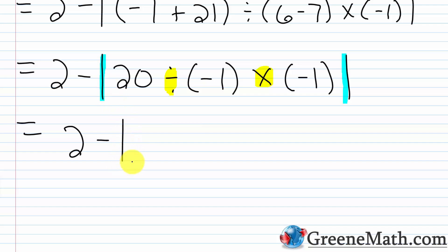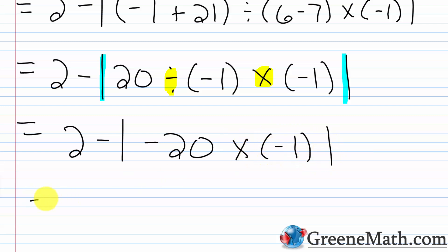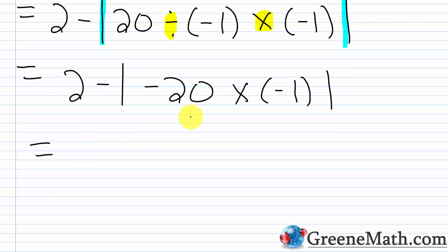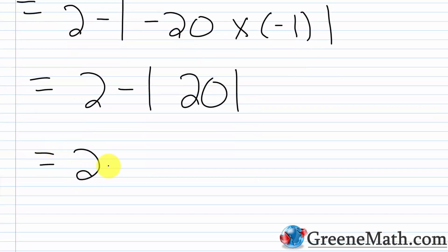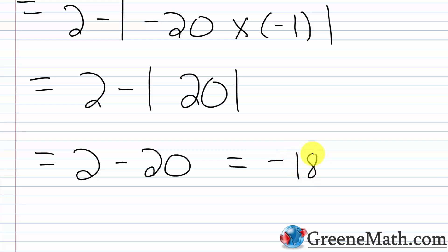Now inside the absolute value bars: negative 20 times negative one. Multiplying by negative one just changes the sign — so this is positive 20. The absolute value of positive 20 is 20. So we have 2 - 20, which is the same as 2 + (-20). The sign is negative since negative 20 has a larger absolute value. Twenty minus two is 18. So the answer is negative 18.